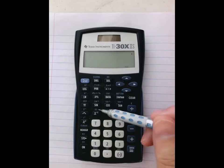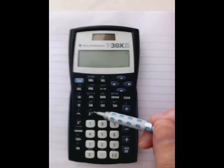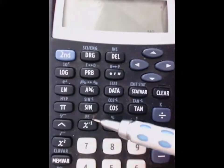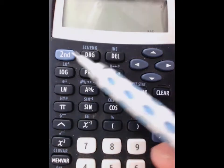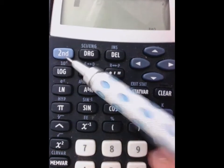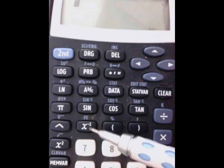It's right here. Let me zoom in. It says EE and it's above the X inverse key, and because it's above the key you need to press the second button in order to access it.